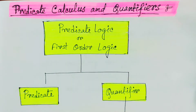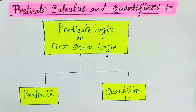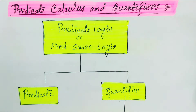Hello everybody, welcome to my YouTube channel, Easy Mathematics. We know what propositional logic is and how we apply it. But propositional logic is not powerful enough to signify all types of assertions used in computer science and mathematics. It also fails to express certain types of relationships between propositions such as equivalence. Let us understand this with an example.